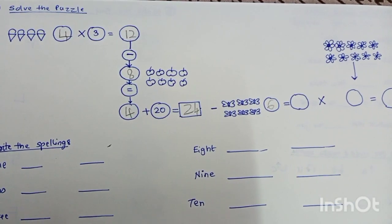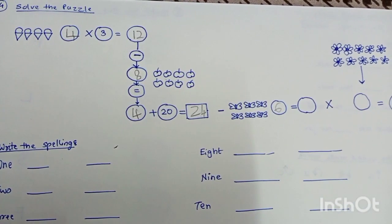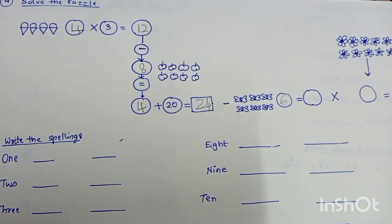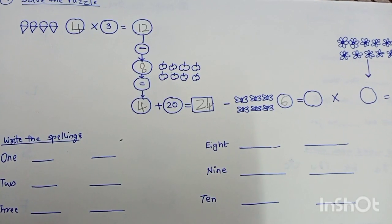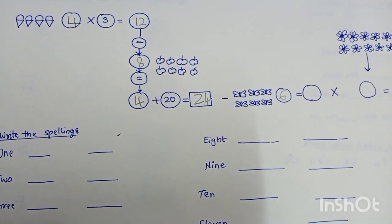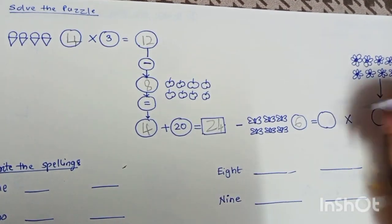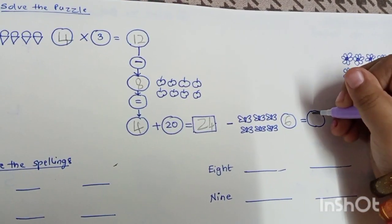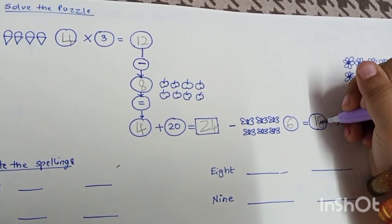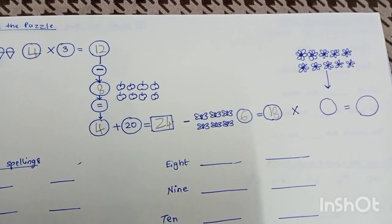Count backward six numbers starting from 24. Take six fingers out and count: 23, 23, 22, 21, 20, 19, 18. So the answer is 18. 18 is in the circle.